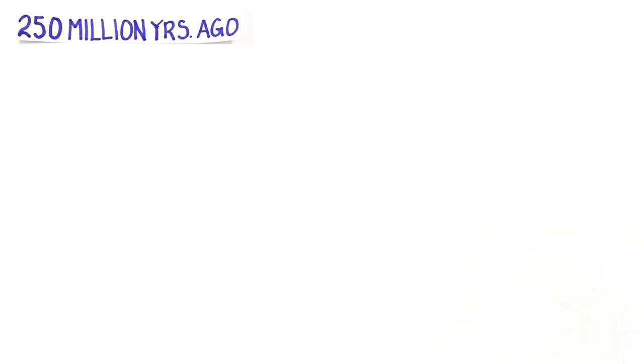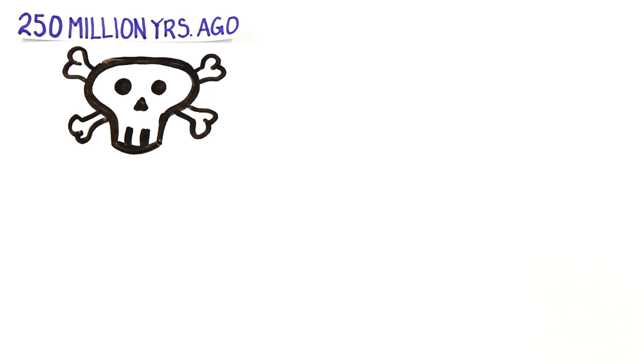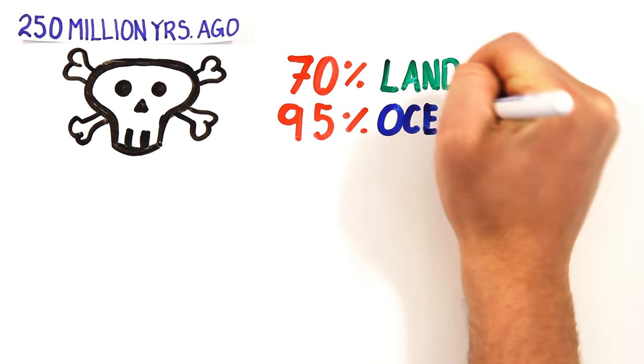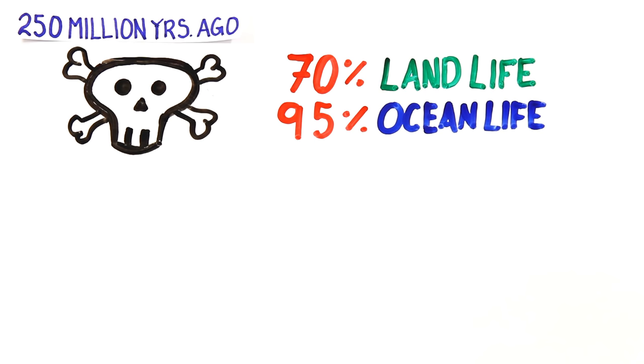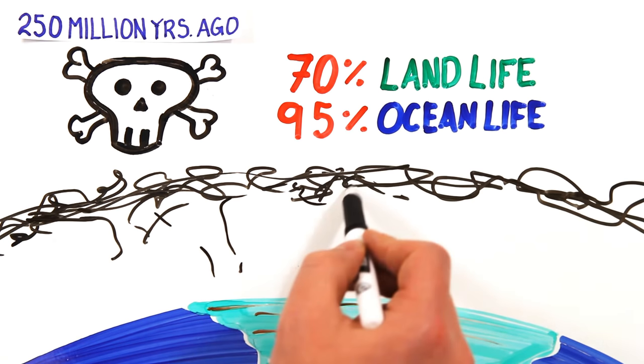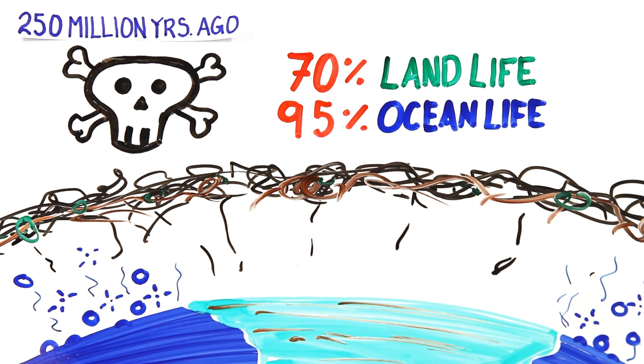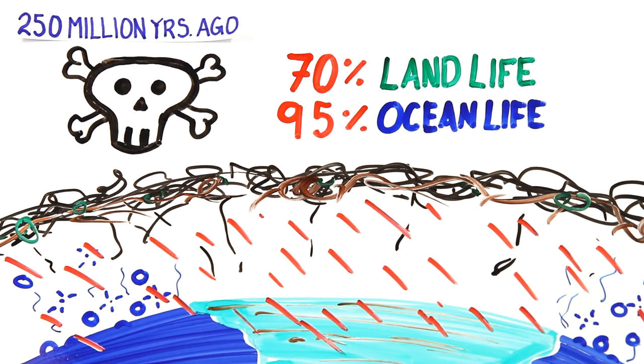250 million years ago is the Permian extinction. The single worst mass extinction in history, 70% of life on land and over 95% of life in the oceans was wiped out. Billions of tons of volcanic gases destroyed the ozone layer, and the average ocean temperature hit 40 degrees Celsius, which is hotter than most hot tubs. Acid rain fell all over the planet, devastating life on land.